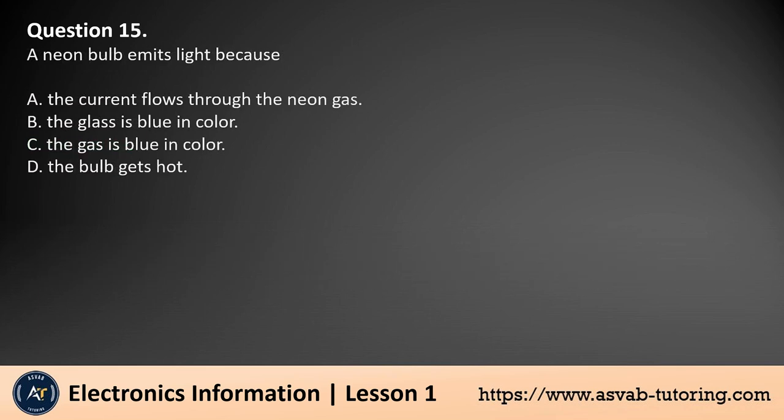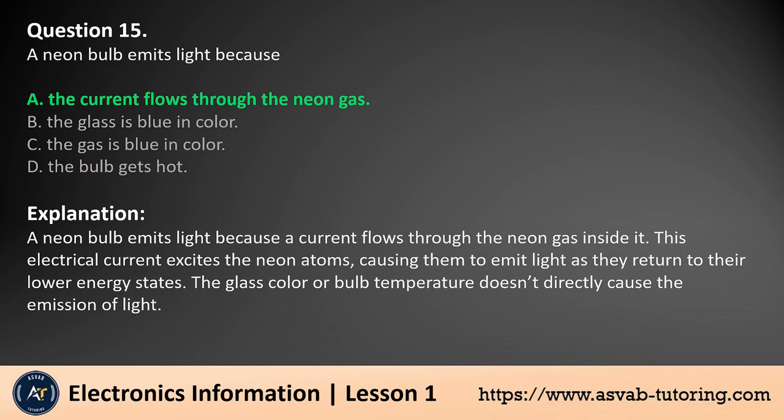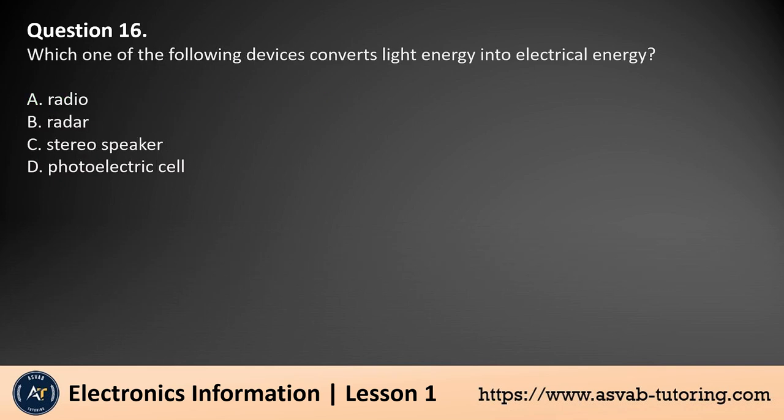Question 15. A neon bulb emits light because: a. The current flows through the neon gas, b. The glass is blue in color, c. The gas is blue in color, d. The bulb gets hot. The answer is a. A neon bulb emits light because a current flows through the neon gas inside it. This electrical current excites the neon atoms, causing them to emit light as they return to their lower energy states. The glass color or bulb temperature doesn't directly cause the emission of light.